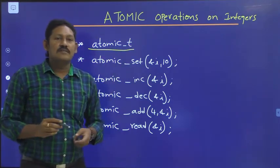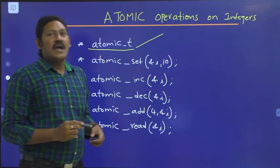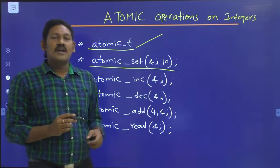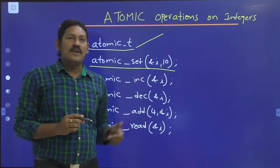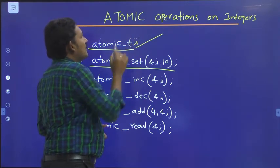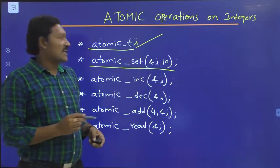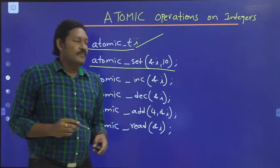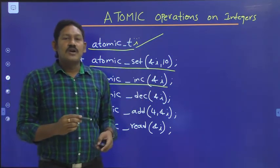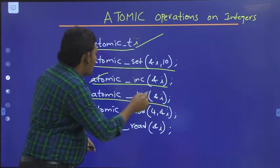atomic_t is used for defining an atomic variable. atomic_set(&i, 10) automatically assigns a value to the atomic variable — here we are assigning value 10 to variable i. The third one, atomic_inc(&i), automatically increments the value.